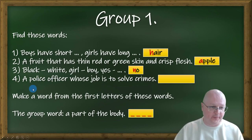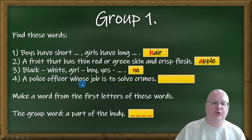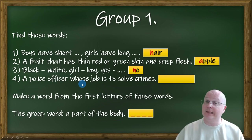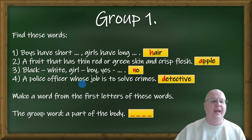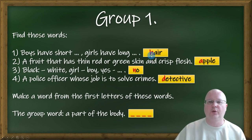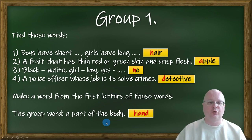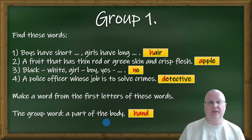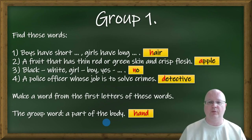A police officer whose job is to solve crimes is a detective. Now we need to make a word from the first letters of these words — it's going to be HAND: H-A-N-D. This is what the students write on a piece of paper. When they get the card from the envelope, they look at the card and write down all four words.